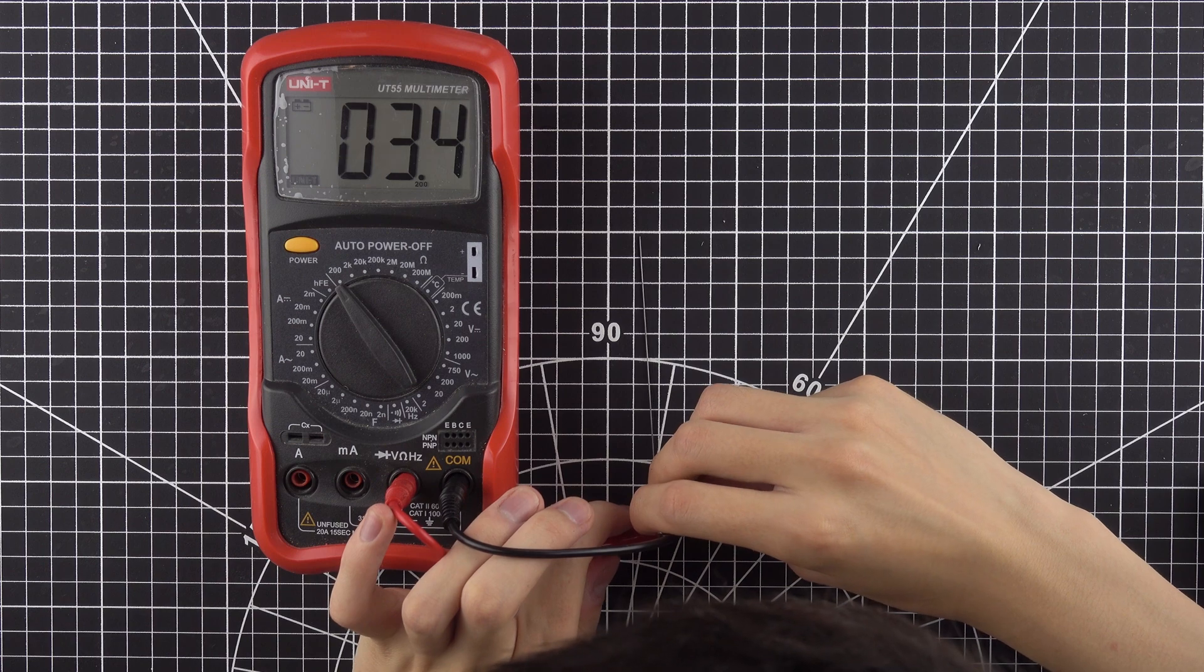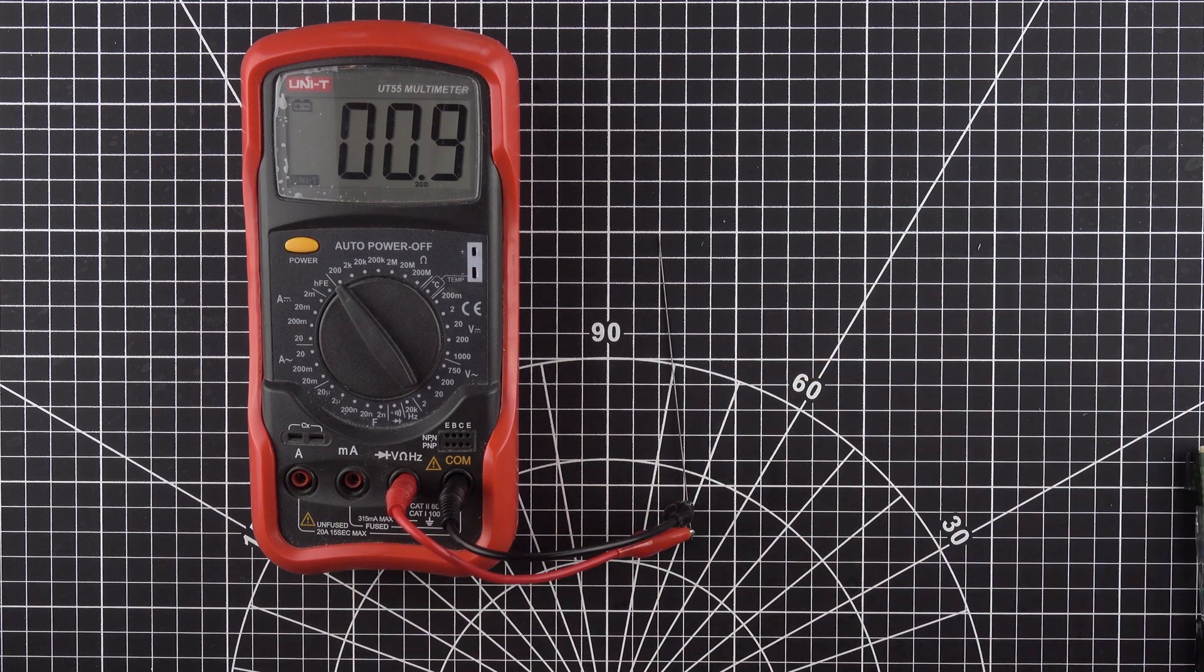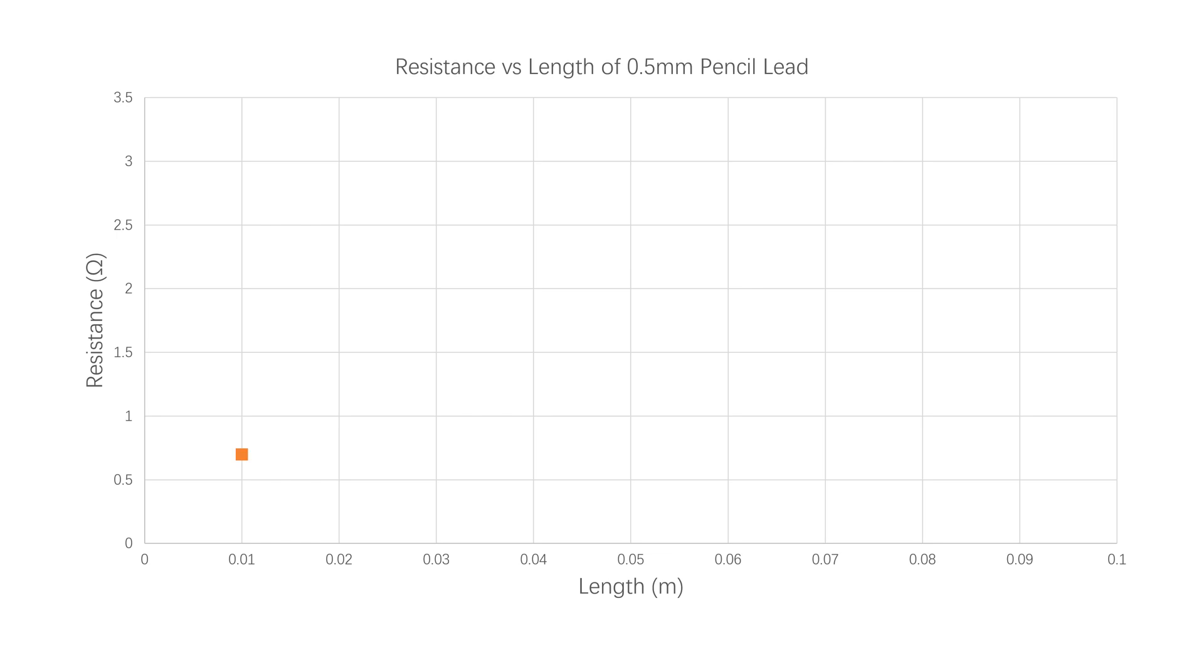Now we can plot the resistance versus probe separation on a scatterplot. Then we could perform linear regression on this data. The slope will be the resistivity per unit area, and the y-intercept corresponds to the contact resistance. We could see from this graph that the resistance of the lead scales linearly with the length of the lead, and that the R squared value is incredibly high.